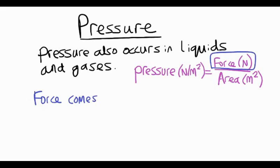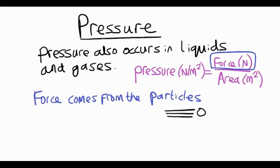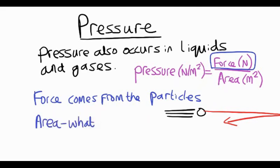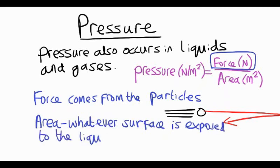The force comes about because the particles in liquids and gases are constantly flying around. They've got lots of energy and they move fast. And when they bump into surfaces, they bounce off and they push. They exert a force on the surface. An area is just whatever surface of an object is exposed to the liquid or gas. It could be the inside surface of a container, or it could be the outside surface of an object which is submerged in the liquid or gas.